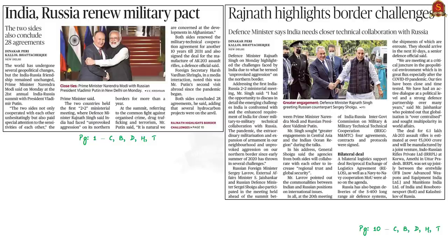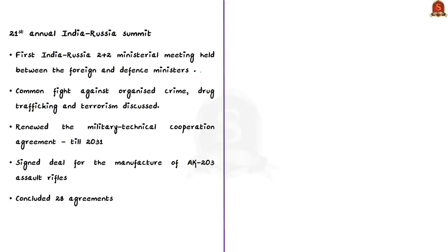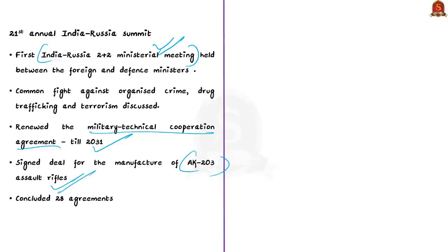The next discussion is on India-Russia relations, drawing from three articles — two news articles and one editorial. The two news articles talk about the 21st Annual India-Russia Summit and its outcomes. Notably, for the first time a India-Russia 2+2 Ministerial Meeting happened, between the foreign ministers and defense ministers of the two countries. Many areas of cooperation were discussed, including a common fight against organized crime, drug trafficking, and terrorism. Both countries renewed their military-technical cooperation agreement for another 10 years till 2031, and a deal was signed for the manufacture of AK-203 assault rifles. In total, 28 agreements were concluded.